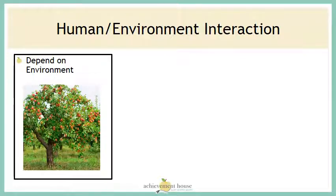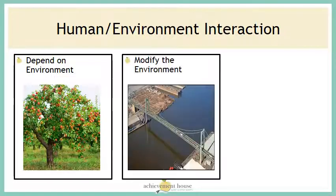This apple tree is an example of how we could be dependent on our environment by using the vegetation and trees to supply us with food. Modifying the environment, or changing our environment — this example is a bridge being built over a river. We had to modify our environment to work around that river.